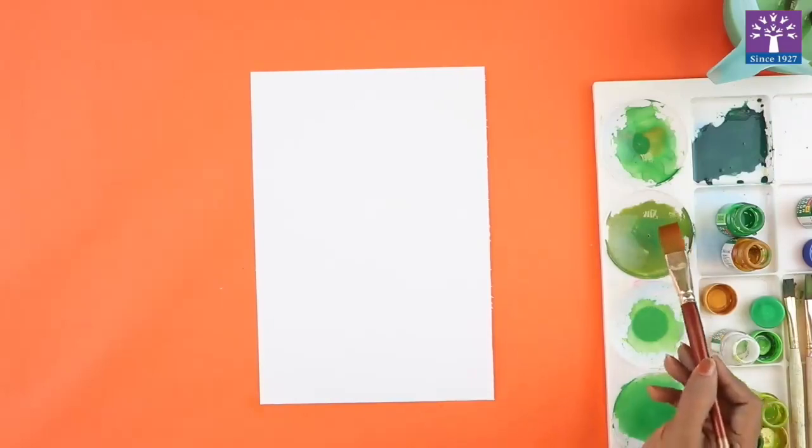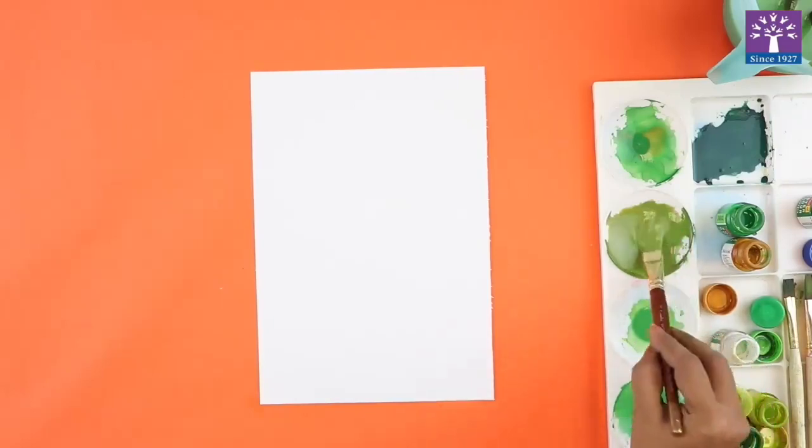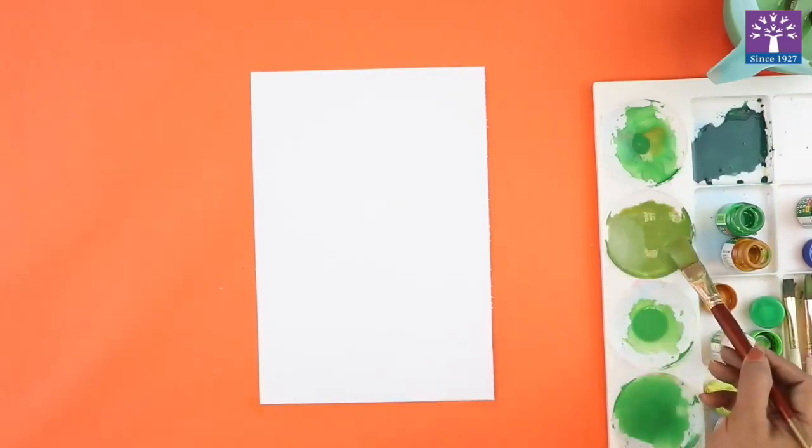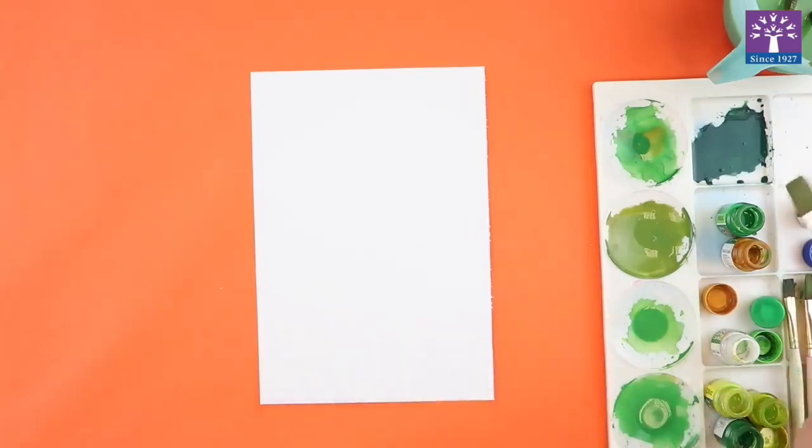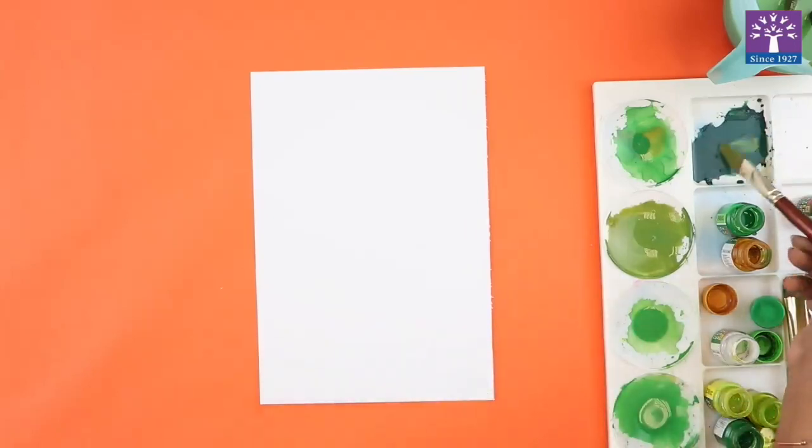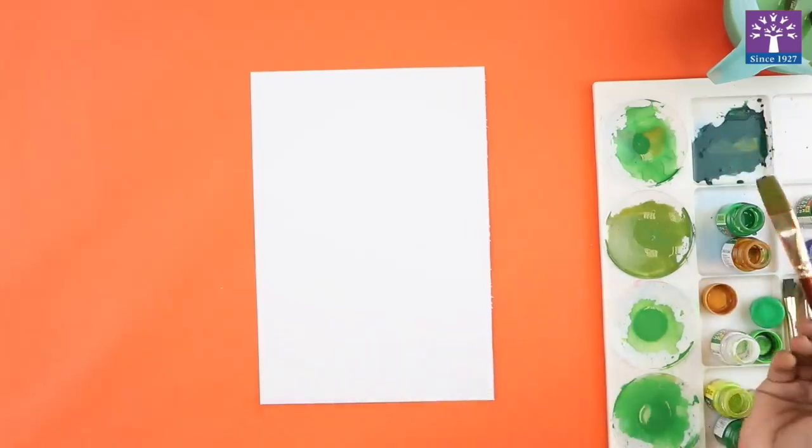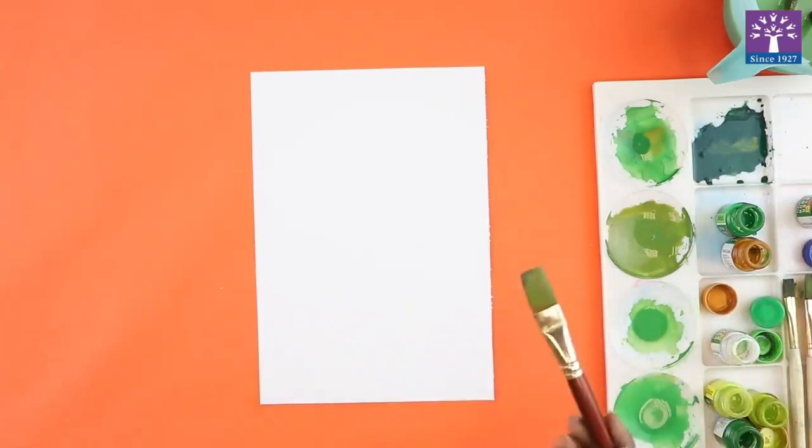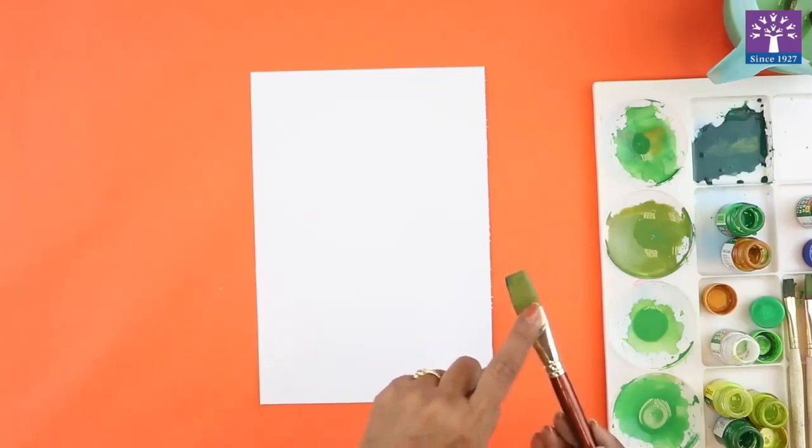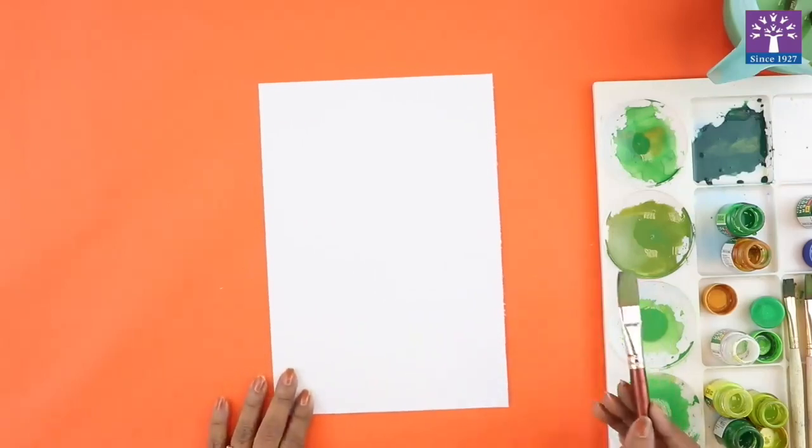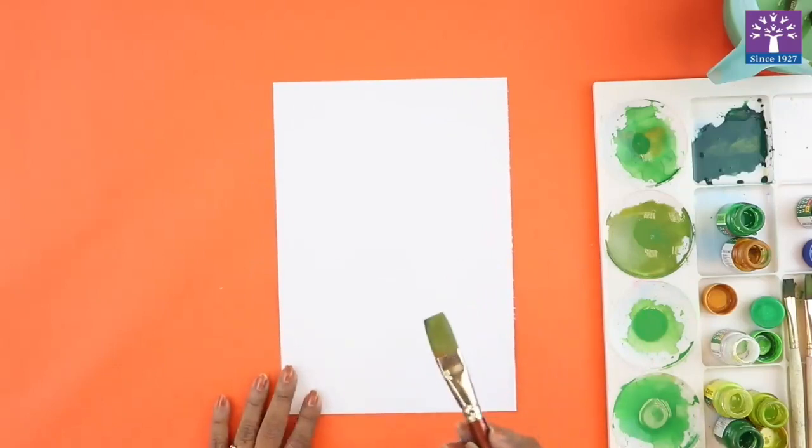I am going to load my flat brush with a green color. In the corner of one tip, I am going to load a dark green color. If you can see, one side has dark color and the rest of the side has the regular green color that we have mixed.